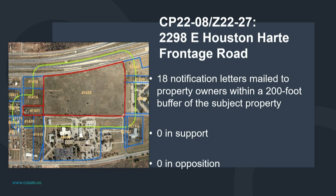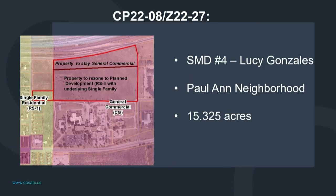Staff sent out 18 notification letters to surrounding property owners and received a number of calls but no one in either support or opposition. Most people thought it was an interesting idea and liked that it was going residential. The tract labeled 41421 in red is the part being rezoned, leaving the commercial along the top. A small flag area that is currently transitional on the comprehensive plan will go to RS3, just as the general commercial bottom part is going to RS3. Transitional refers to the comprehensive plan designation for that area, not the zoning classification.